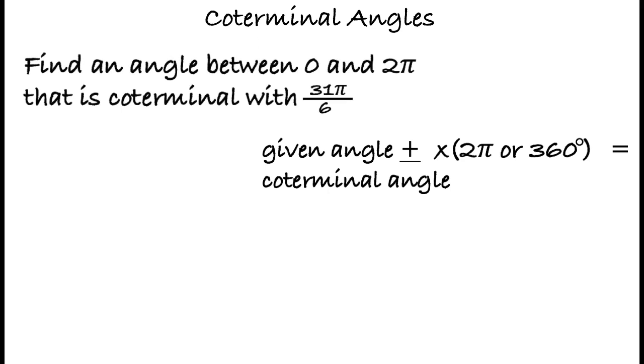Find an angle between 0 and 2 pi that is coterminal with 31 pi over 6. For this example, we would need to subtract a multiple of 2 pi since the value is given in radians and is larger than 2 pi.